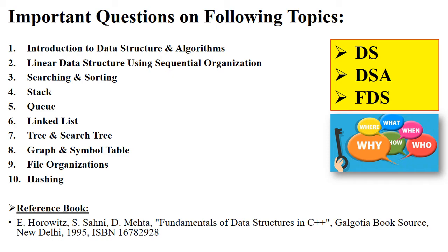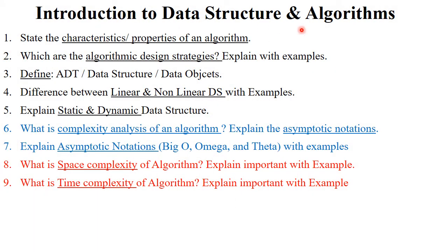The first topic is Introduction to Data Structure and Algorithm. On this topic, exams will ask about the characteristics and properties of an algorithm, or which algorithm design strategies to explain with examples — such as divide and conquer strategy and greedy algorithm strategy with their names and examples. Then the definition of abstract data type, data structure, and data objects — these three questions are generally asked for four marks. Next is the difference between linear and nonlinear data structure with examples, for six marks. Also, explain static and dynamic data structure with meaning and examples for four marks. Then, what is complexity analysis of an algorithm — explain asymptotic notation with examples.